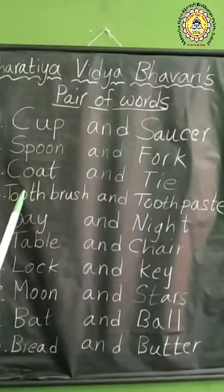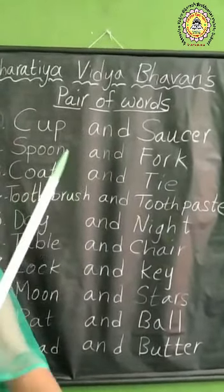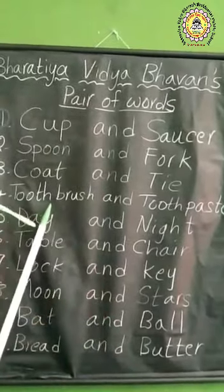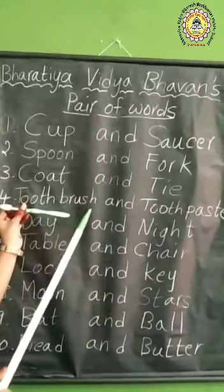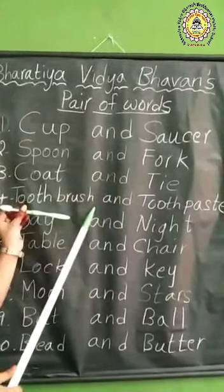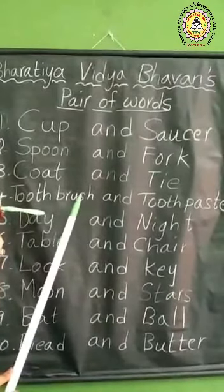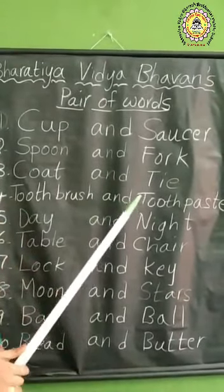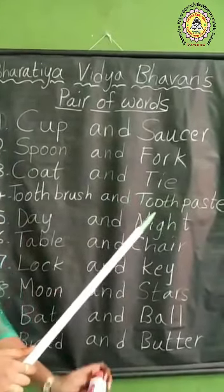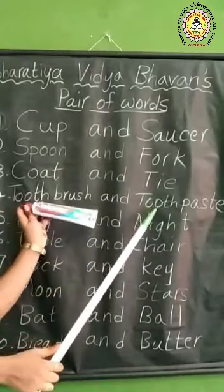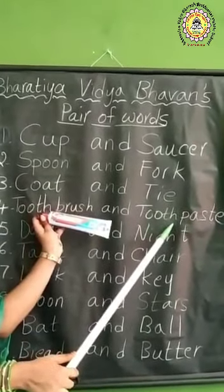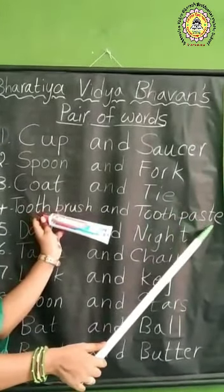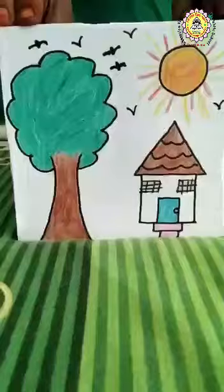Next one: toothbrush. T-O-O-T-H — tooth. B-R-U-S-H — brush. Toothbrush. Toothbrush and toothpaste. T-O-O-T-H — tooth. P-A-S-T-E — paste. Toothpaste.